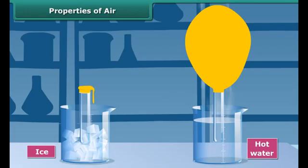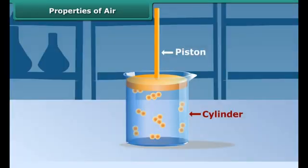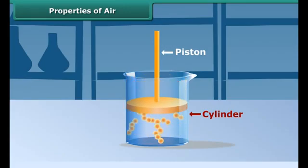This shows that air exerts pressure. Take a cylinder fitted with a piston. Press the piston inward. You can compress the air inside the cylinder, so air can be compressed.